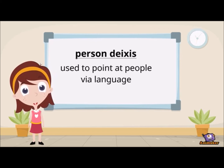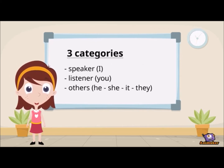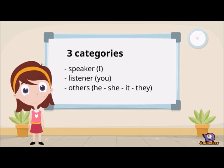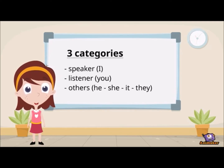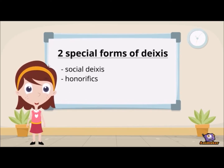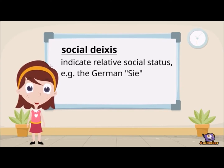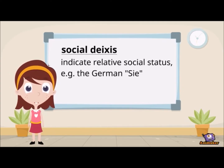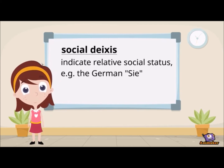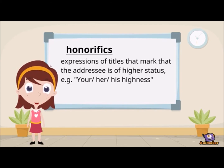Person deixis is used to point at people via language. There are three categories: the speaker (I), the listener (you), and others such as he, she, it, they. There are also two special forms of person deixis: social deixis and honorifics. Social deixis refers to forms used to indicate relative social status — for example, the German Sie indicates that the speaker has a lower social status than the listener.